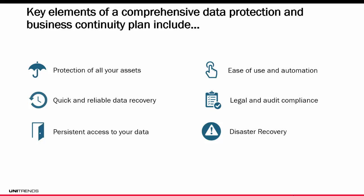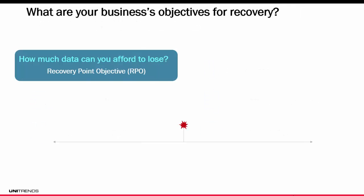On top of all that, disaster recovery is a big issue nowadays. Disaster recovery is the ability to recover in case of a disaster, whether that's a manmade disaster or a natural disaster such as fire or hurricane. It's usually about being able to recover from a system-wide crash. So you need to ask yourself, with your business continuity strategy, what are your business's objectives for recovery?